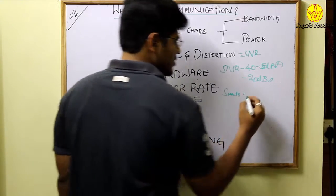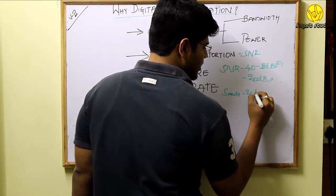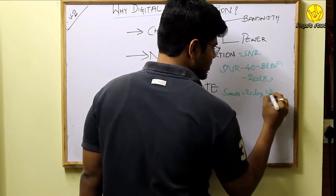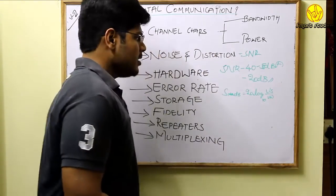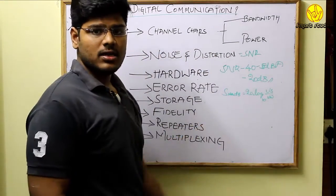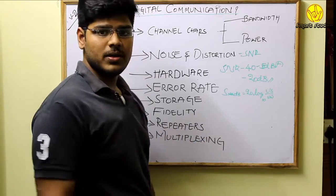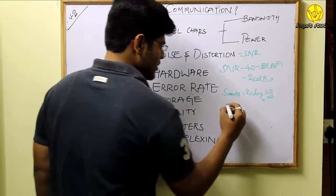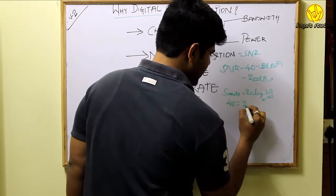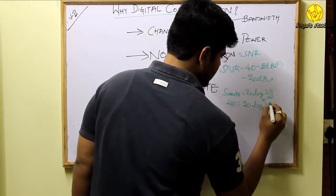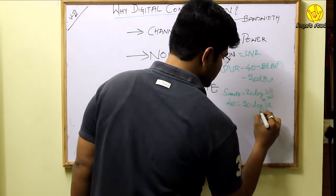In case of analog signal, we have discussed that the SNR has to be 40 decibels at the receiver. So 20 log Vs to the Vn, Vs to the base 10, so Vs is equal to 100 times Vn.